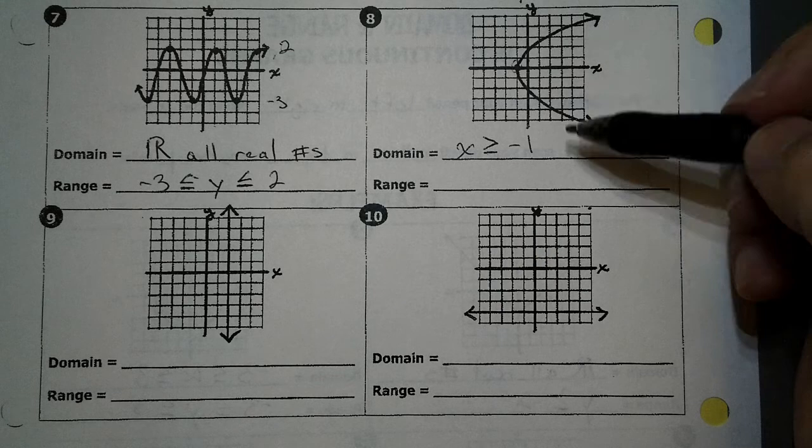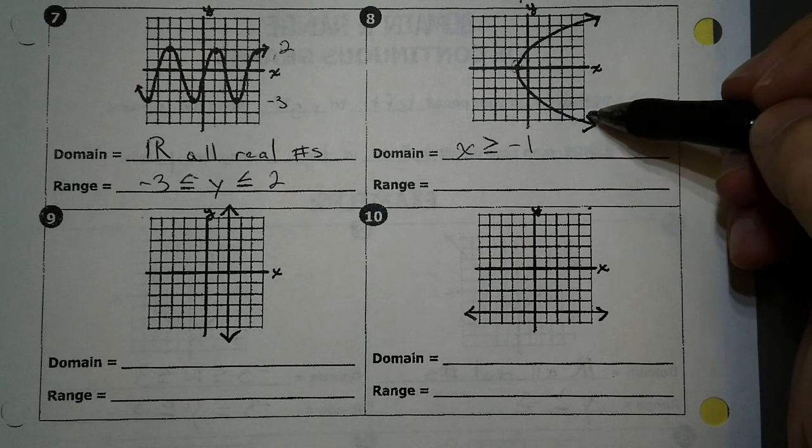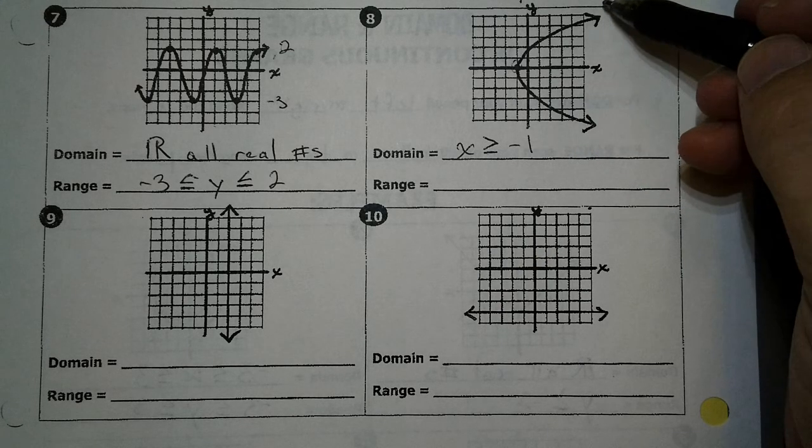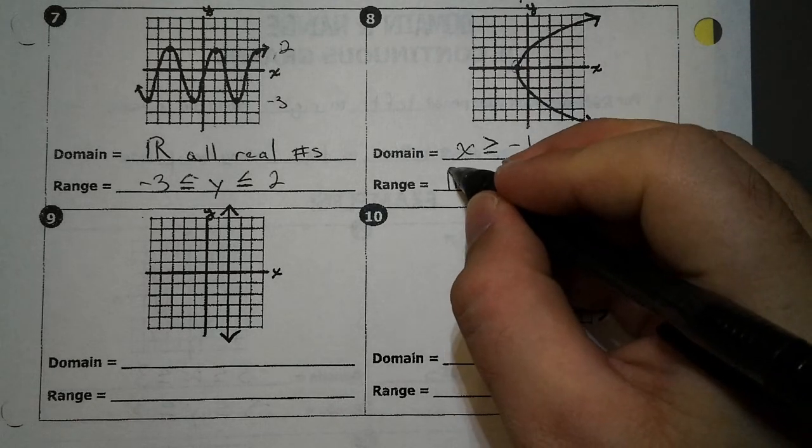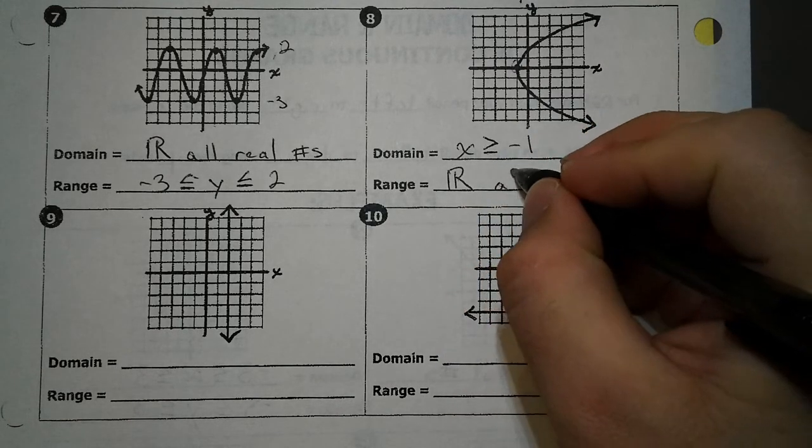Now for our range, we're just looking at the bottom and the top. At the bottom, that arrow keeps going. At the top, that arrow keeps going. So on this one, our range is going to be all real numbers.